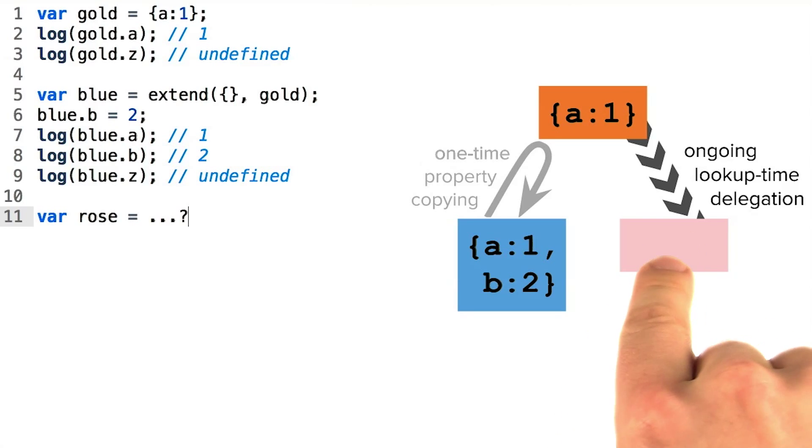the idea would be to give the rose object some linkage to the gold object, such that whenever a requested property can't be found on rose, it uses gold as sort of a fallback source of properties.